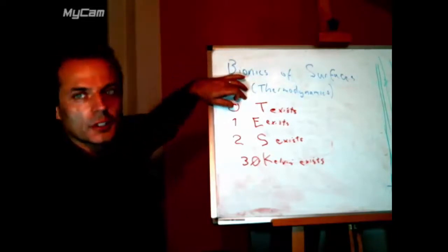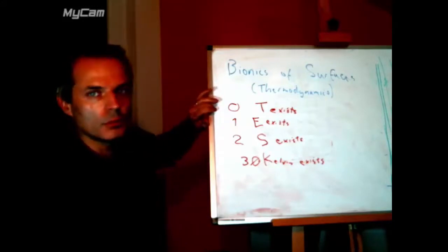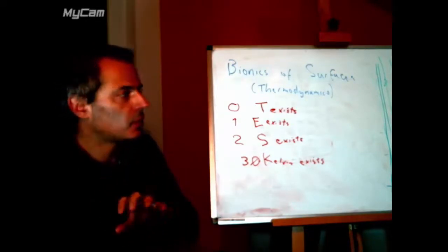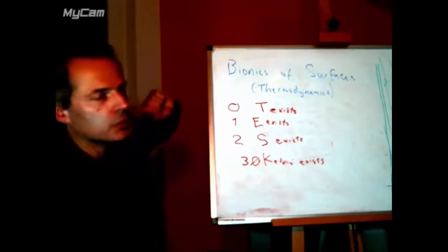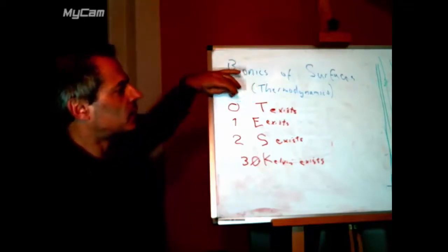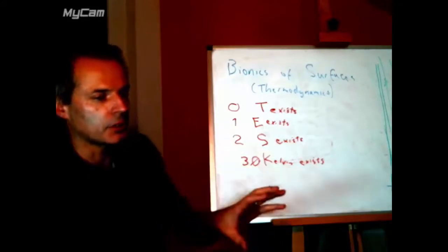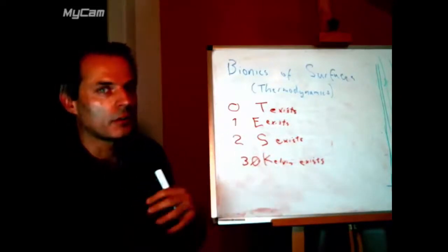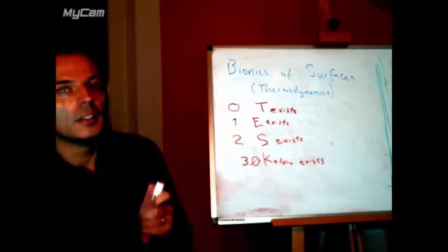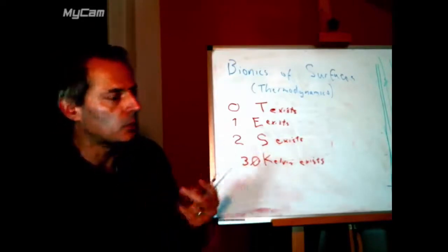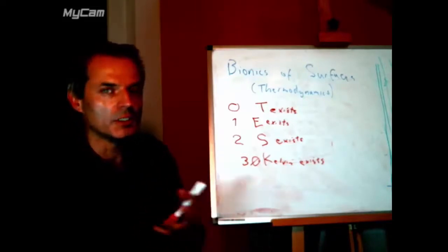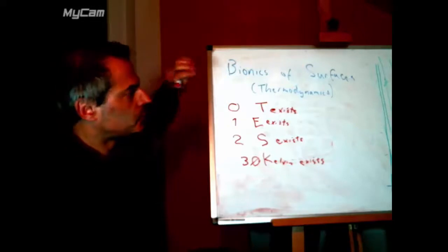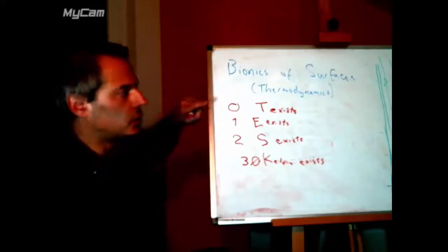The zeroth law of thermodynamics just tells us that temperature exists. It says: if we measure the temperature of one thing and we go to another object and measure its temperature and it's the same, then it actually is the same. If two objects are at the same temperature, they're in thermal equilibrium. If we move one and find it's in thermal equilibrium with a third object, the other two will also be in thermal equilibrium — meaning they have the same temperature. It's kind of simple but it's necessary, because otherwise logically it's possible that temperature didn't exist.